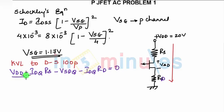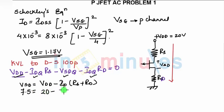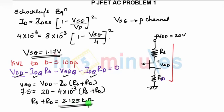So substituting the values, we can write: VDD is given as 20, VSD is given as 7.5, IDQ is given as 4 milliamperes, RS plus RD. So from this you can find RS plus RD equals 3.125 kilohms. So you got RS plus RD as 3.125 kilohms.